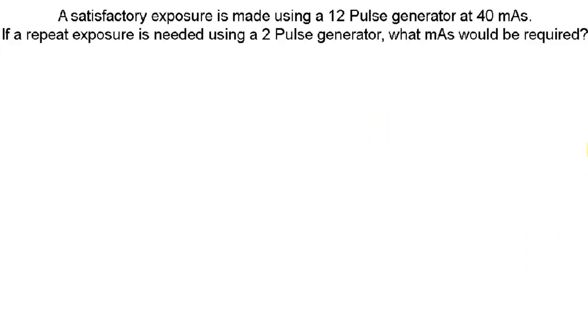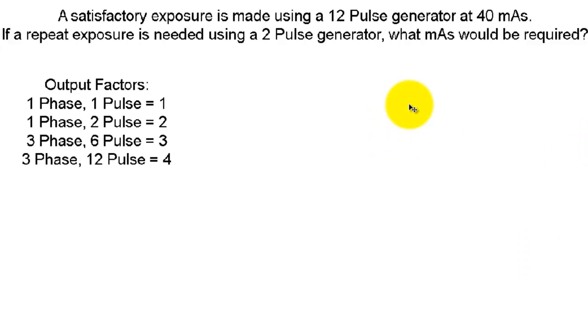Let's look at the power factors. Each type of generator that you might be asked to compensate for in this type of problem is listed here. We have single phase 1 pulse, 2 pulse, and 3 phase 6 pulse, 3 phase 12 pulse. They are each assigned a specific power factor, 1 through 4, 1 being the least efficient, 4 being the most efficient.